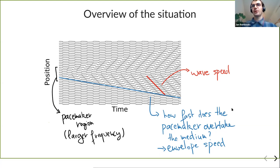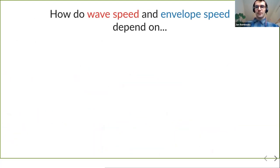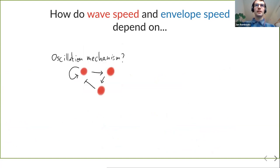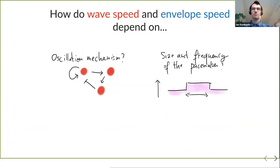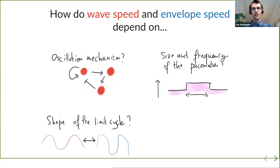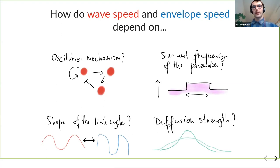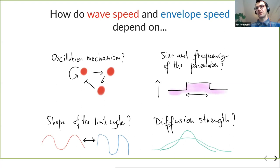More specifically, how do these speeds depend on the mechanism of oscillation, the size and frequency of the pacemaker region, the shape of the limit cycle — whether it's more harmonic or a relaxation type oscillator with sharp jumps — and then the usual suspect: diffusion strength, since larger diffusion of molecules might be expected to make waves go faster.